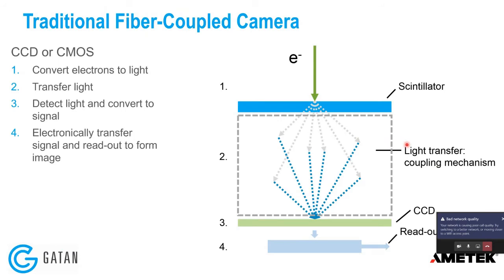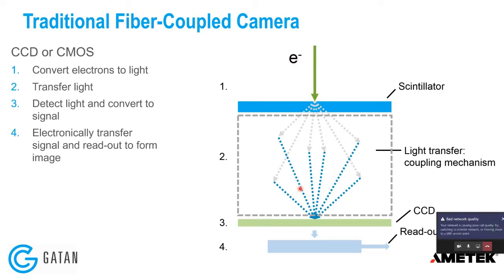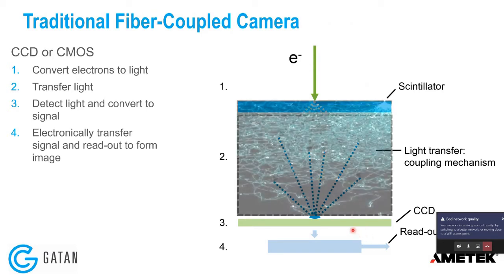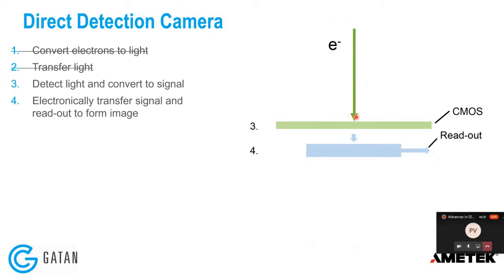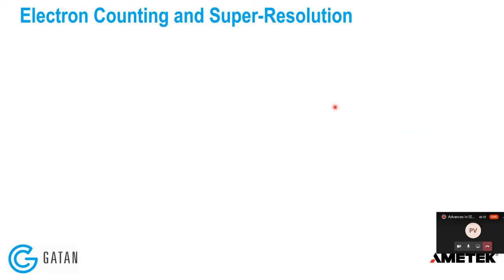In traditional fiber-coupled cameras there is quite a lot of scattering, which hurts resolution. In direct detection, everything is nicely confined and the sensor is exposed straight to the electrons, greatly improving resolution. The key technique applied here is called counting. When an electron strikes a pixel it generates charge spread over neighboring pixels. You can read out all the charge (accumulation mode), or you can measure the center of gravity of the electron — finding that about 75% of the charge produced is localized in specific pixels — and assign the entire event to one electron. This dramatically improves image quality and reduces noise.